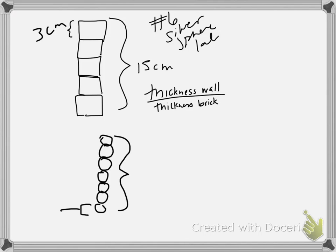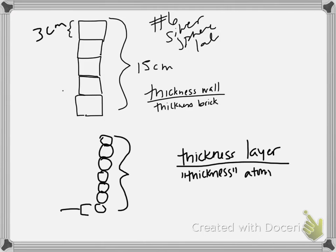Yeah, how would I do that? The thickness of the layer — the whole layer — divided by the thickness of each atom. What's going to be your value for the thickness of each atom? You've got three options: radius, diameter, or circumference. What comes closest to being the height of each? The diameter. So the thickness of the layer of silver, which you calculated, divided by the diameter of each atom, is going to give you the number of atoms thick that that layer of silver is.